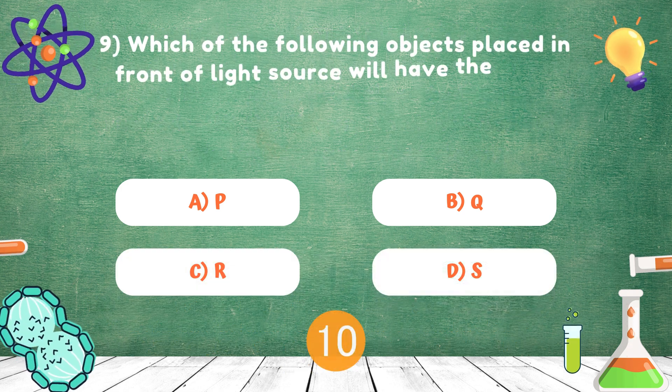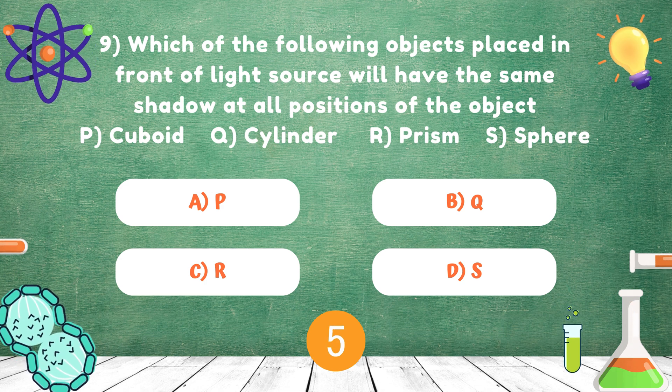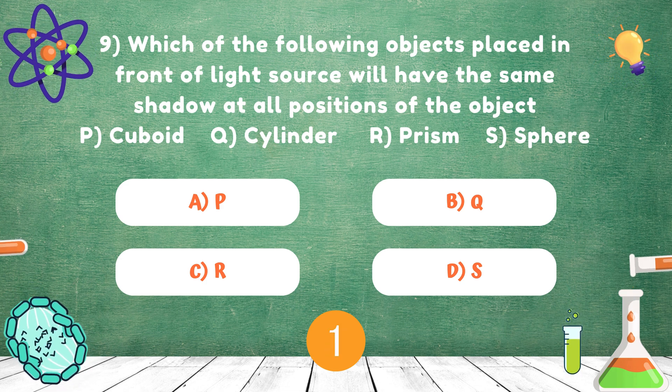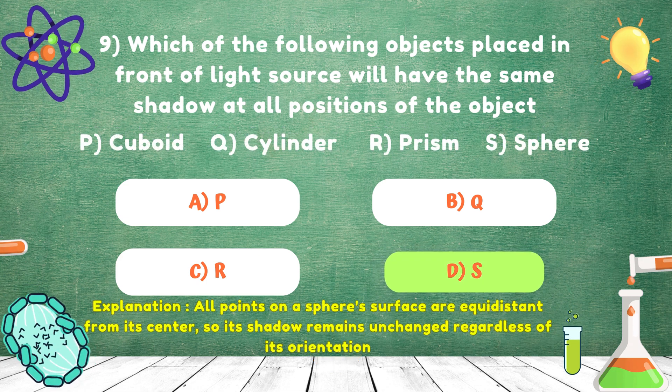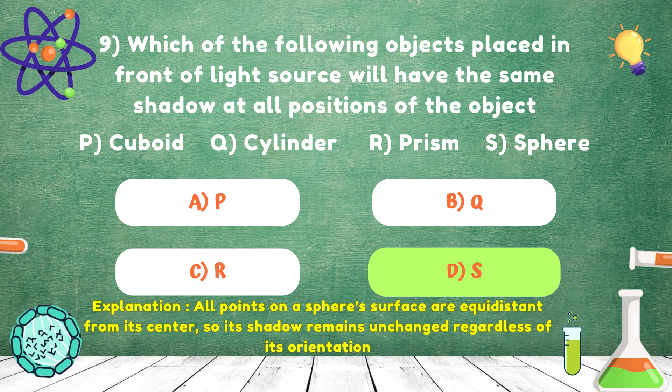Which of the following objects placed in front of light source will have the same shadow at all positions of the object? P cuboid, Q cylinder, R prism, S sphere. Answer is S, sphere.